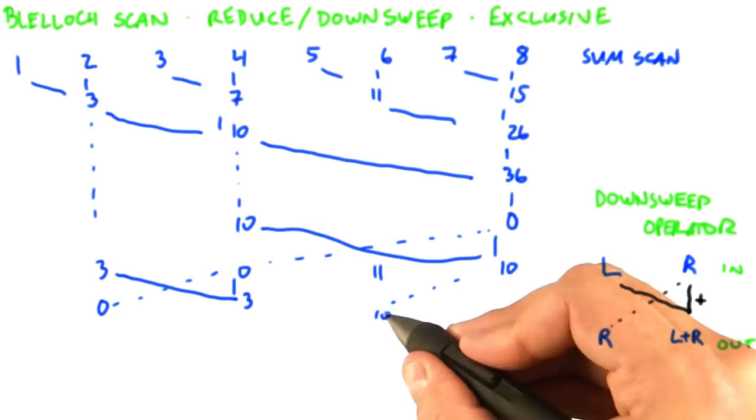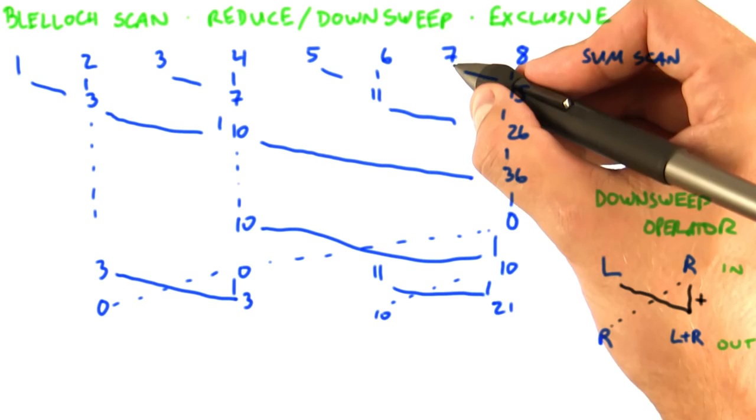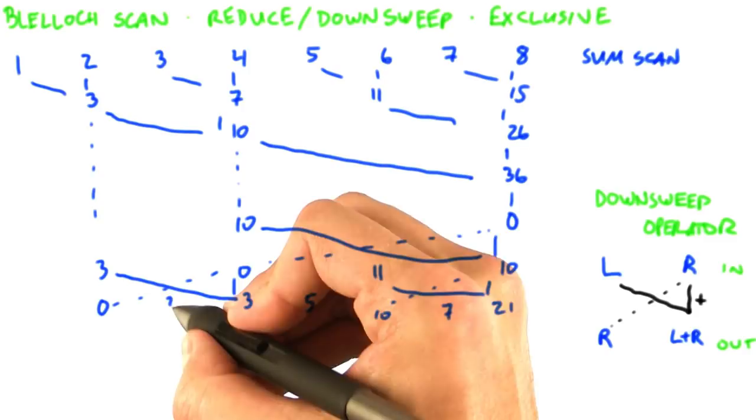Now for the final step, each of these elements will be paired with the item to its left. So again we're going to have to drag down intermediate values we kept around. We're going to drag down this 7, drag down this 5, drag down this 3, drag down this 1, and then for the final time apply our down sweep operator.